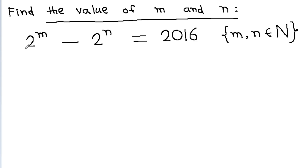In this video we have given that 2 to the power m minus 2 to the power n is equal to 2016, where m and n belong to natural numbers, and we have to find the value of m and n.